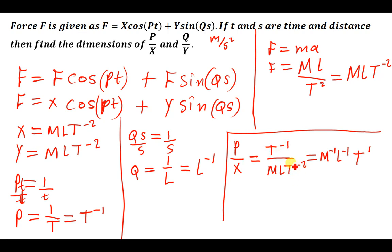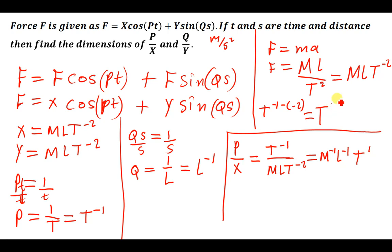When dividing two indices with the same base, we subtract the powers. So for T we have T to the power negative 1 minus negative 2, which is negative 1 plus 2, giving T to the power positive 1. Therefore the dimensions for P over X are M⁻¹L⁻¹T¹.